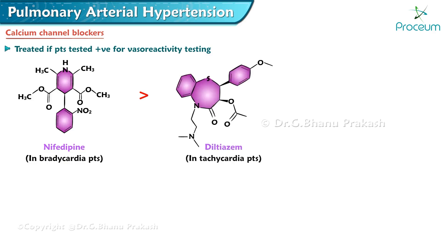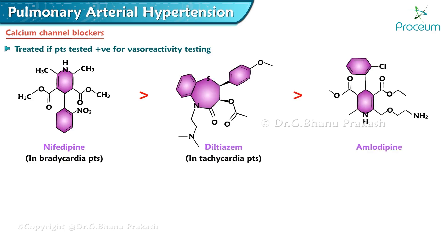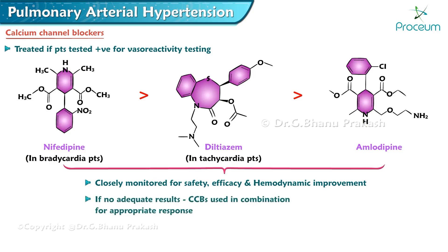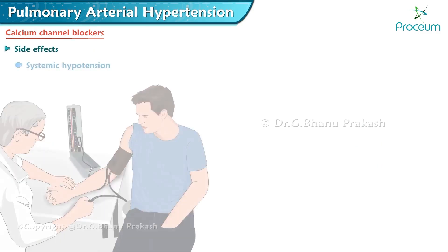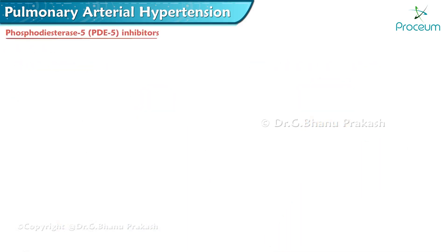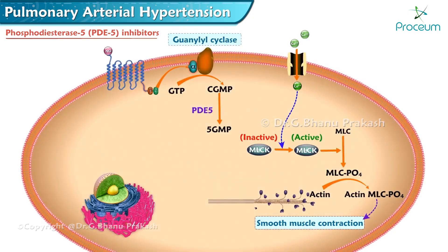The most commonly used calcium channel blockers are nifedipine and diltiazem in bradycardia patients, and amlodipine in tachycardia patients. These patients are closely monitored for safety, efficacy, and hemodynamic improvement. If adequate results are not shown, the above-mentioned drugs can be used in combination for appropriate response. Side effects include systemic hypotension and lower limb peripheral edema.